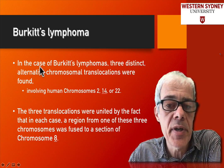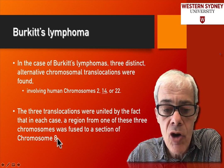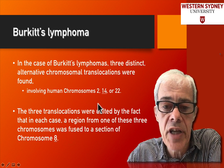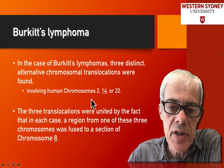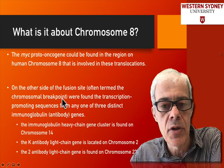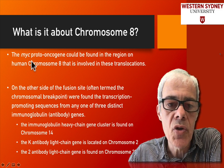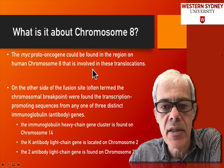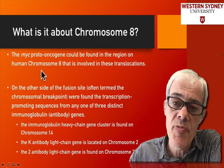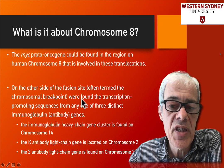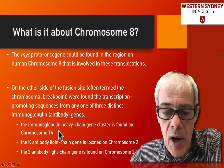So in the case of Burkitt's lymphoma, there were these distinct chromosomal translocations, typically involving chromosome 8 being fused with a section of chromosome 14, 2, or 22. What is it about these translocations that's causing the tumour? The MYC protein was on chromosome 8 and this sequence was being translocated to another chromosome, where the MYC protein was being expressed by an inappropriate promoter. So once the translocation occurs, the MYC gene is being put beside these immunoglobulin promoters.